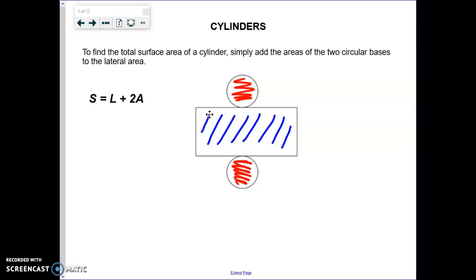Take your lateral area, which on your formula sheet is a more complicated formula, and add the area of the base. Since there's two bases, you take it times two. Lateral area plus twice the area of the bases gives you your total surface area: S = L + 2A.